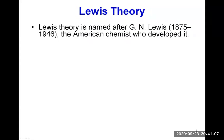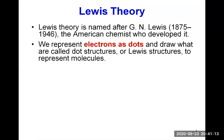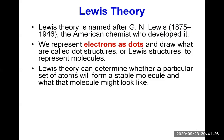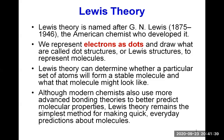So the Lewis theory is named after G.N. Lewis, an American chemist who developed it. In this theory, we represent electrons as dots and draw what we call dot structures, or Lewis structures, to represent molecules. The Lewis theory can determine whether a particular set of atoms will form a stable molecule and what that molecule might look like. Although modern chemists also use more advanced bonding theories to better predict molecular properties, Lewis theory remains the simplest method for making quick, everyday predictions about molecules.